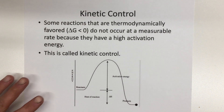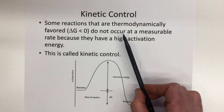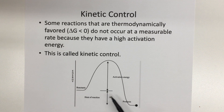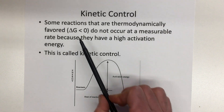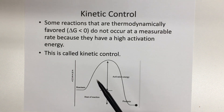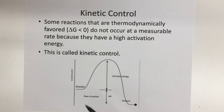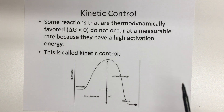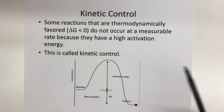Some reactions don't occur at a measurable rate — they occur extremely slowly. Why? It could be a high activation energy. Going from reactants to products, we might calculate delta G less than zero, telling us the reaction should proceed forward. But we set this up in the lab, we wait, and we don't see anything happen. Delta G tells us which direction the reaction will go, not how fast. If it has a high activation energy, it'll go really slowly, and we call that kinetic control — even though delta G is negative, the reaction won't proceed at a noticeable rate.